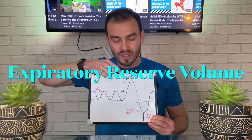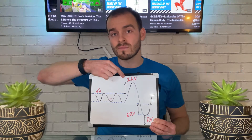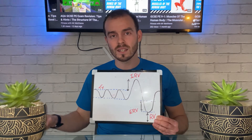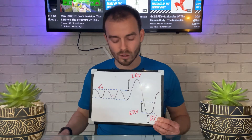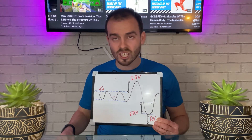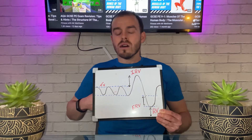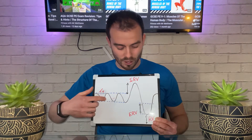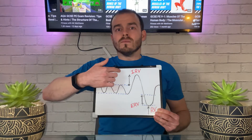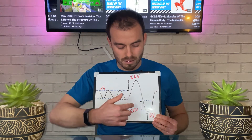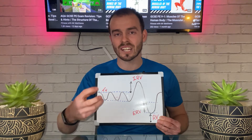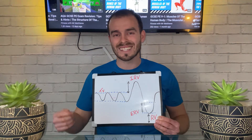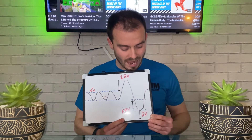Moving on to ERV — expiratory reserve volume — it's exactly the same concept as IRV, but it refers to the extra additional air that we forcefully breathe out on top of tidal volume. So I breathe in, and then I forcefully breathe out. That extra amount of air breathed out on top of tidal volume is expiratory reserve volume.